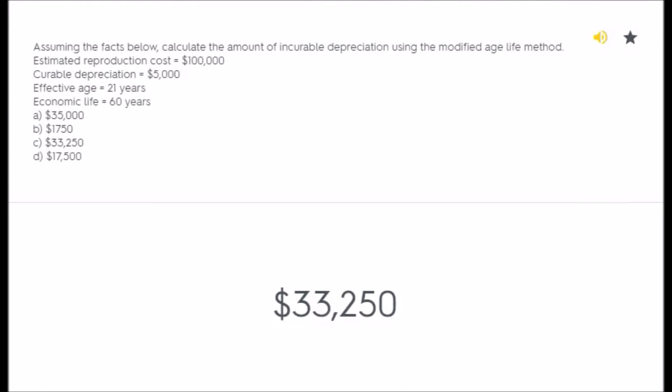Assuming the facts below, calculate the amount of incurable depreciation using the modified age-life method. Estimated reproduction cost equals $100,000; curable depreciation equals $5,000; effective age equals 21 years; economic life equals 60 years. A) $35,000, B) $1,750, C) $33,250, D) $17,500.